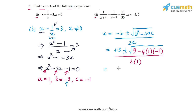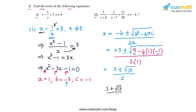Evaluating the expression, we have 3 ± √(9 - 4×(-1)) = 3 ± √(9 + 4) = 3 ± √13, all divided by 2. So the two roots are x = (3 + √13)/2 and x = (3 - √13)/2.